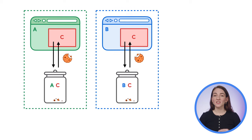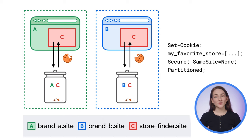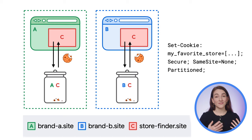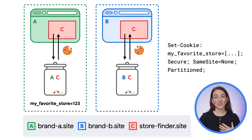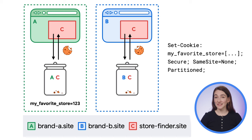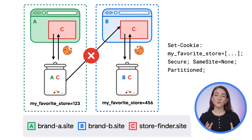In this example, the cookie comes from storefinder.site, which hosts a map of stores that enables a user to save their favorite store. By using CHIPS, when brandA.site embeds storefinder.site, the value of the 'my favorite store' cookie is 123. Then, if brandB.site also embeds storefinder.site, they will set and send their own partitioned instance of the cookie, with the value of 456. This means embedded services can still save state, but do not have shared cross-site storage that would allow cross-site tracking.